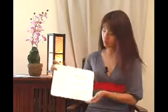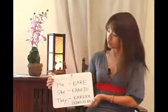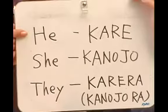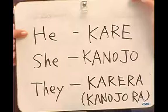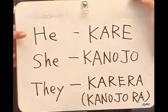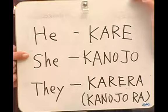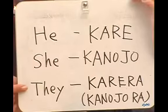Now we've learned how to describe yourself and the person you're speaking to — let's talk about the third party. Here's the list of words in Japanese. 'He' is kare, which you use when pointing out a third party who is male. 'She' is kanojo for a female third party.